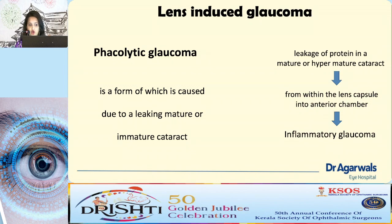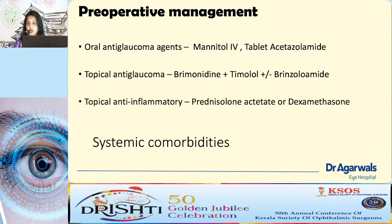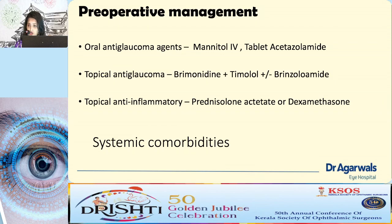The ultimate management in phacolytic glaucoma is lens extraction and IOP control. Pre-operatively, start oral anti-glaucoma agents including IV mannitol and tablet acetazolamide after confirming no allergy. Topical prostaglandin analogs should be avoided as this is an inflammatory condition. Topical anti-inflammatories should be started to reduce post-operative inflammation. Systemic comorbidities must be assessed, as surgery cannot be immediately performed in uncontrolled hypertensives or diabetics.